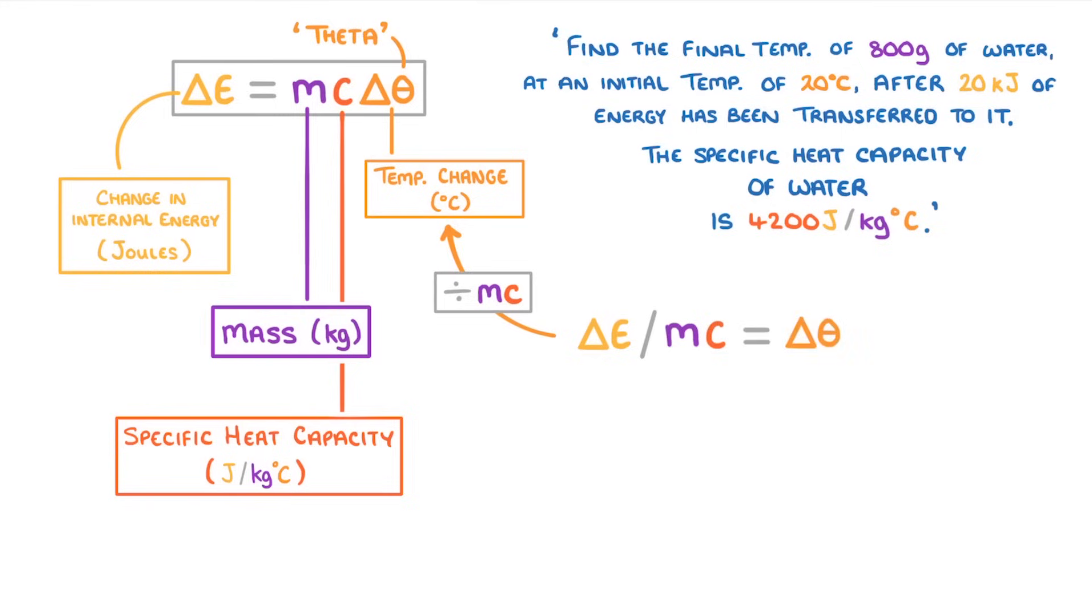Next, we make sure all of our units are correct. So change 800 grams to 0.8 kilos, and change 20 kilojoules to 20,000 joules, and then plug these values into the equation.